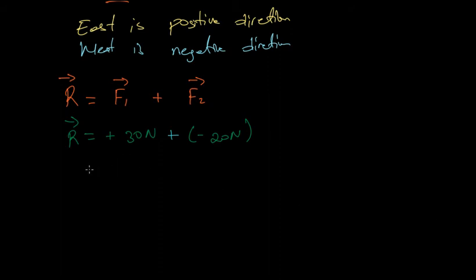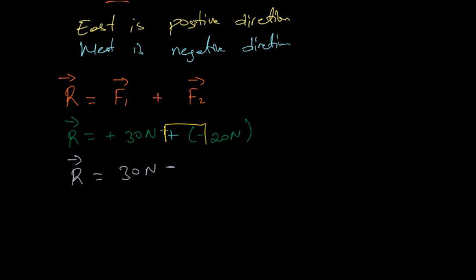Our resultant R equals 30 newtons. We have a positive sign and a negative sign; multiplying a positive by a negative gives a negative. So the resultant equals 30 newtons minus 20 newtons, which gives us 10 newtons. Since this is positive 10, we know our resultant is 10 newtons to the east.